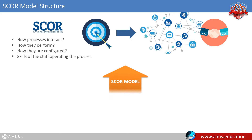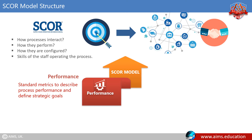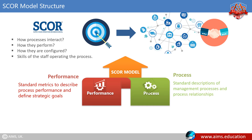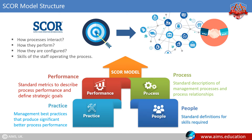The SCOR reference model consists of four major components: Performance — standard metrics to describe process performance and define strategic goals; Processes — standard descriptions of management processes and process relationships; Practices — management best practices that produce significantly better process performance; and People — standard definitions for skills required to perform supply chain processes.